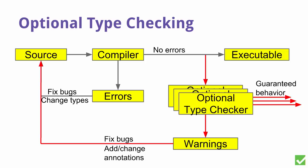Another nice thing is that you can run multiple optional type checkers. You decide what properties are interesting to you and enable only those type checks. So you can pick and choose what properties you want to enforce — whether SQL injection attacks are important to you, or whether you care more about null pointer exceptions. You are free to choose.